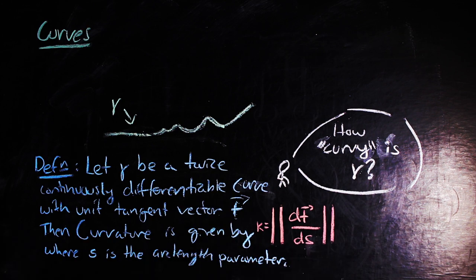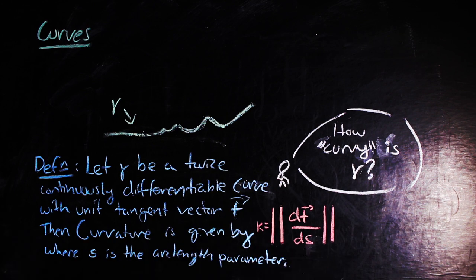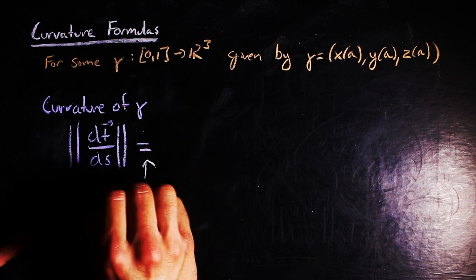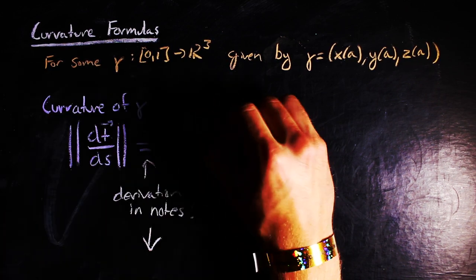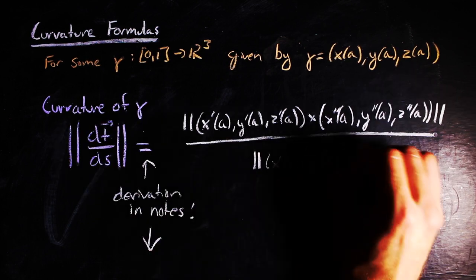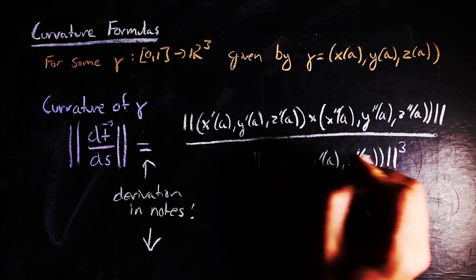Now, for a curve in three dimensions and some regular parameterization gamma, which is equal to the ordered triple x of a, y of a, z of a, we can derive that the curvature is just the norm of the cross product of the first and second derivatives of gamma all over the norm of the first derivative of gamma cubed.